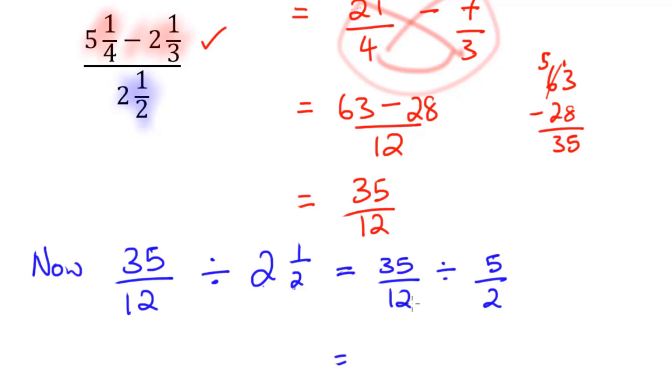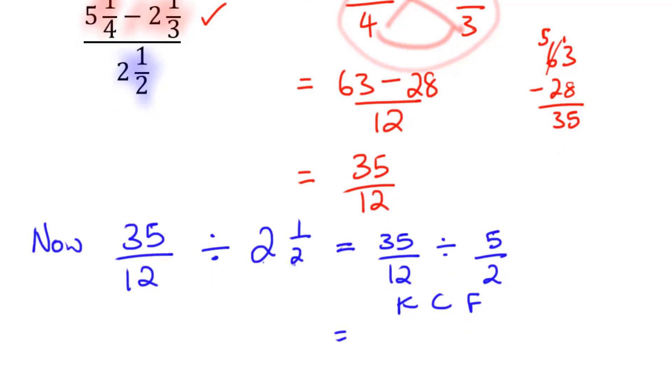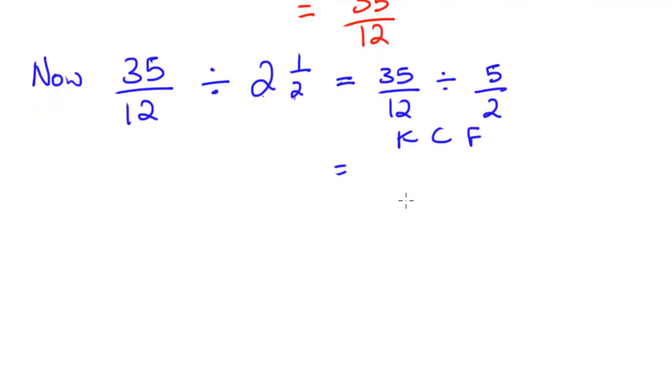And now I can keep the first. I can KCF. I can keep the first, change the sign and flip the second. So that's going to be 35 over 12 times two over five.